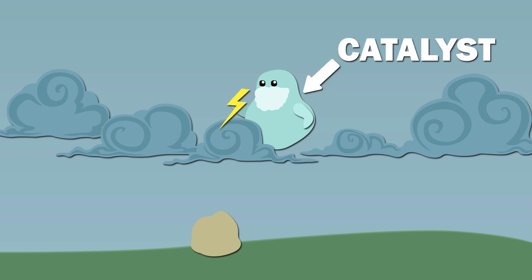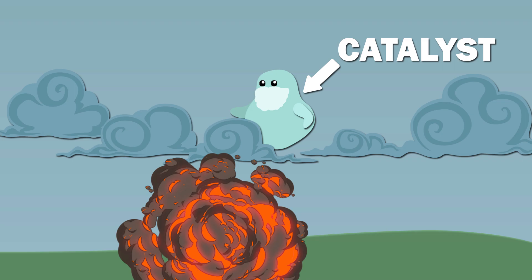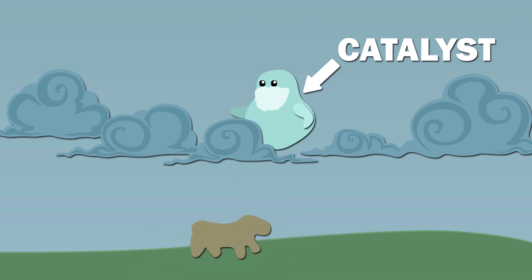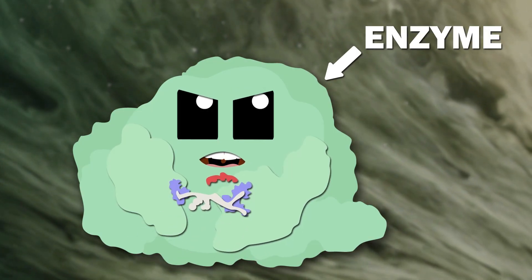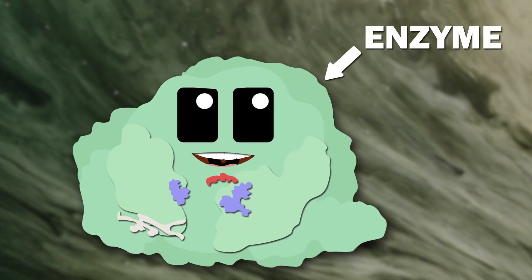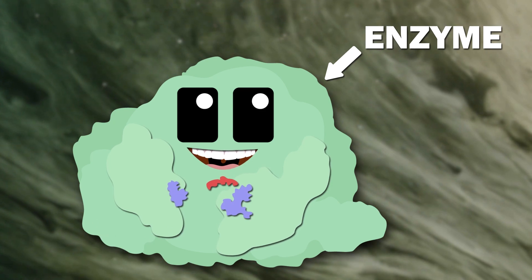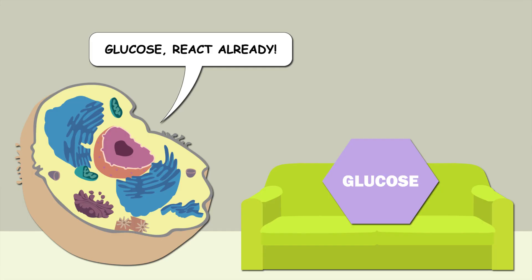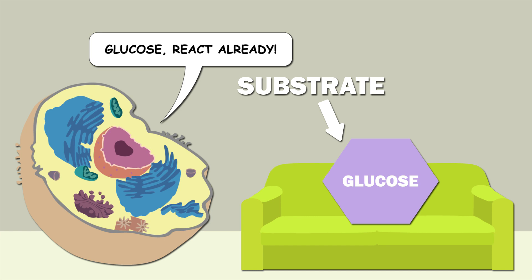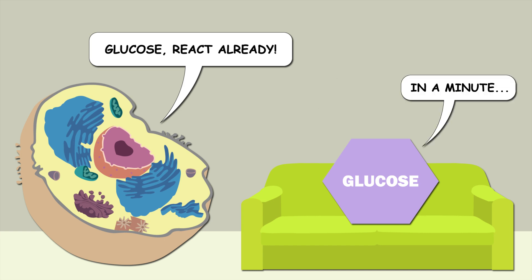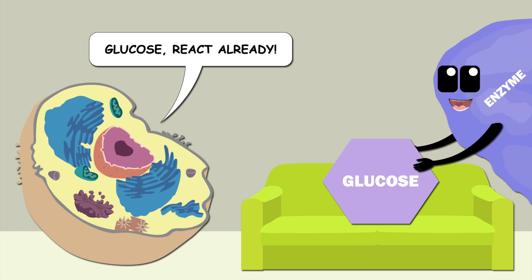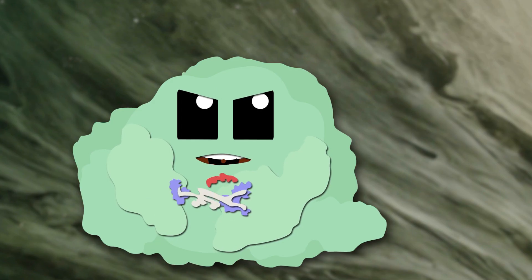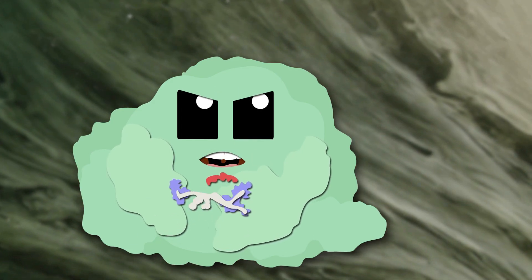A catalyst is a molecule that speeds up a chemical reaction without being consumed or altered by the reaction. Enzymes are biological catalysts that make metabolic reactions occur at fast enough rates to sustain life. Without enzymes, reactions between substrates — the substances upon which enzymes act — would happen super slowly or even not at all. Enzymes can accelerate reactions by up to 10 to the 21 times.